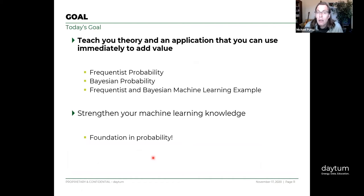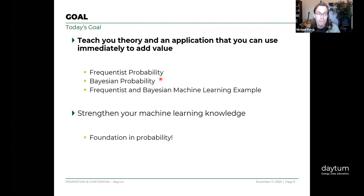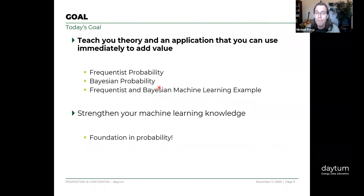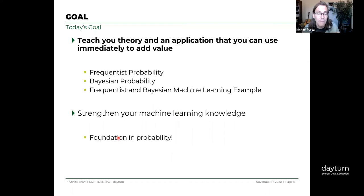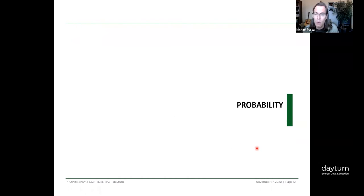Today we'll teach the theory and applications so you can have immediate impact. We'll cover frequentist probability, Bayesian probabilities, interesting probability concepts, and then dive into frequentist and Bayesian machine learning using the simplest machine - linear regression. The whole idea is to strengthen your foundation in machine learning by building it on a strong foundation of probability. A lot of people dive into machine learning without first dealing with probability, and I think that's essential.